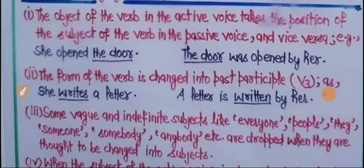Rule number 2: The form of the verb is changed into past participle. Passive voice میں verb کی third form یعنی past participle استعمال ہوگی۔ مثال: She writes a letter → A letter is written by her.